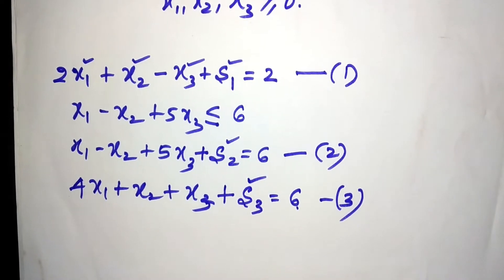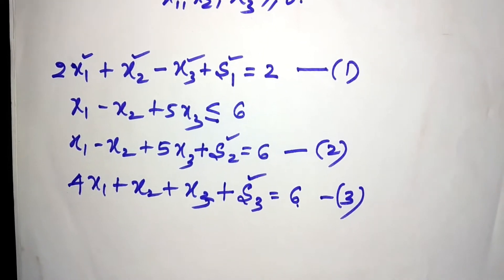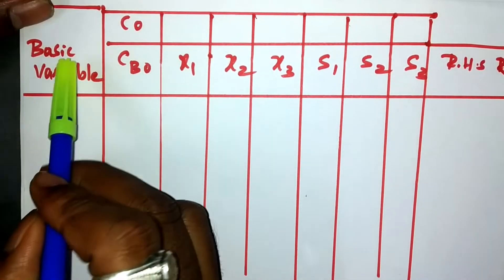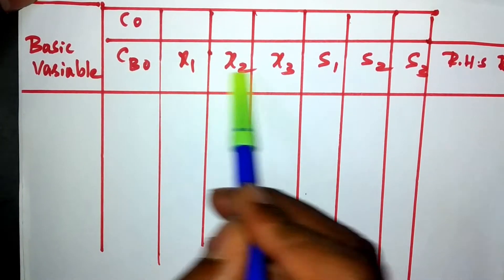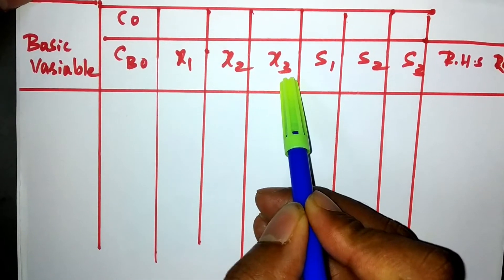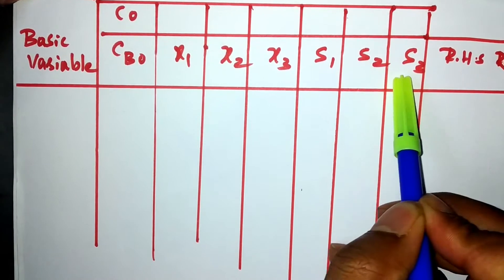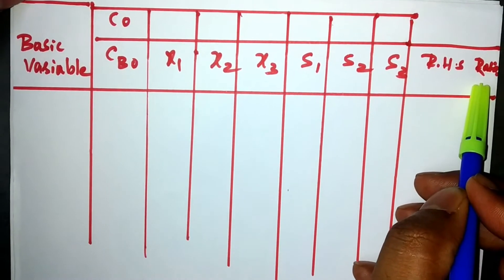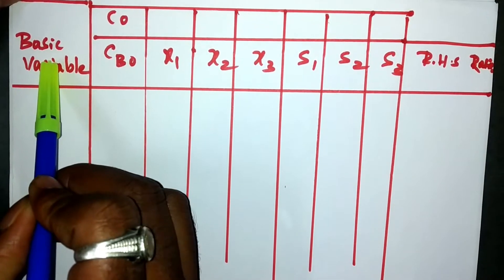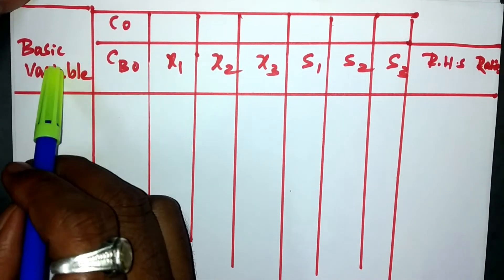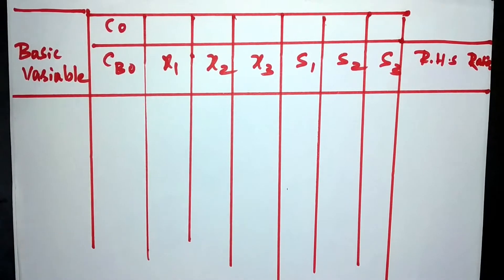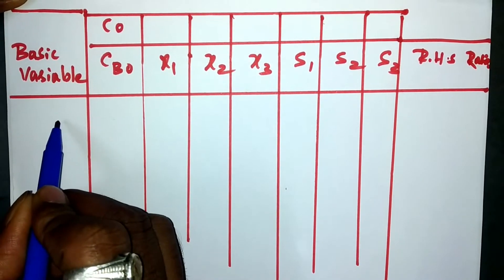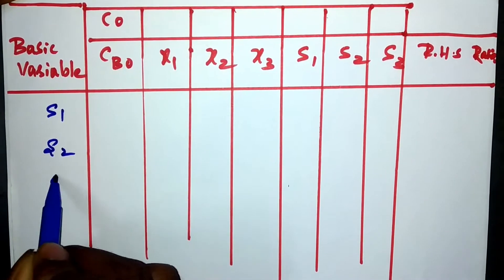After converting the constraints into standard form, we need to construct the simplex table. The table has columns for basic variables, CB0, and all variables x1, x2, x3, s1, s2, s3, plus RHS and ratio. For the first iteration, we always take the slack variables as basic variables: s1, s2, and s3.